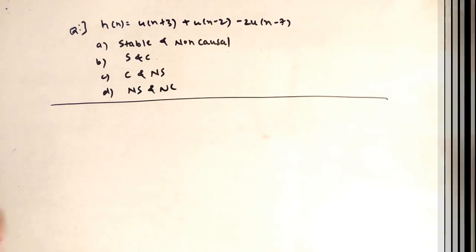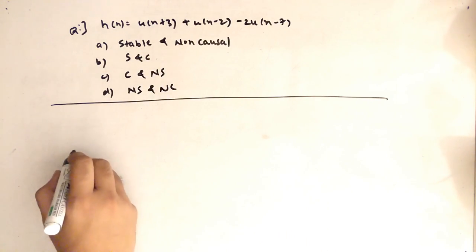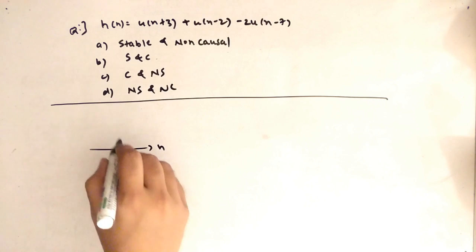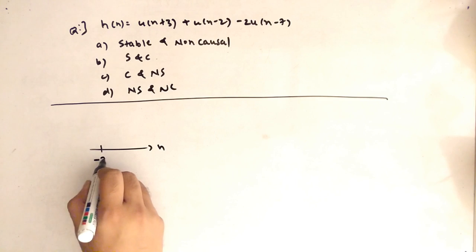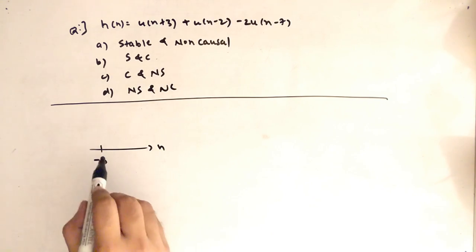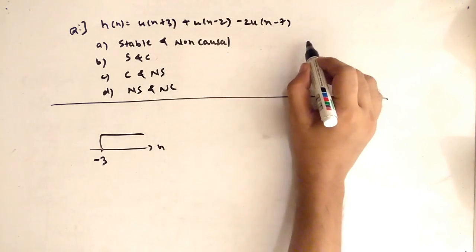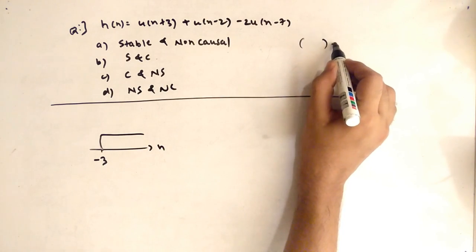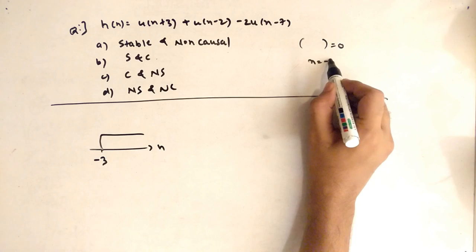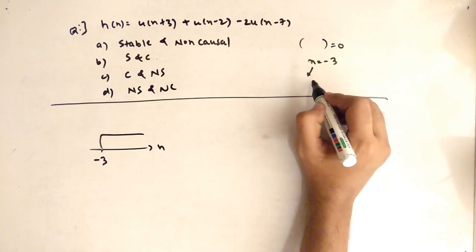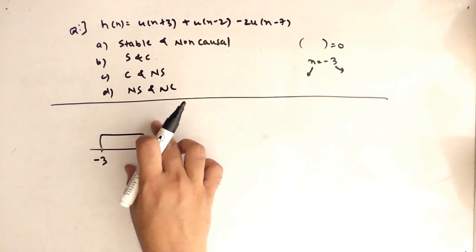To find the answer, we first draw the graph. The x-axis is n and y-axis is amplitude. For u[n+3], set the bracket equal to 0: n+3=0 gives n=-3. So the u[n] graph starts at the origin n=-3, extending to the positive side.